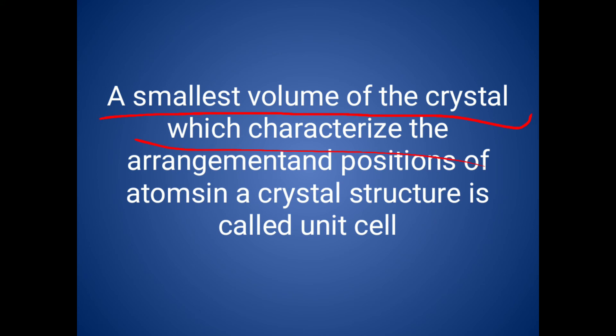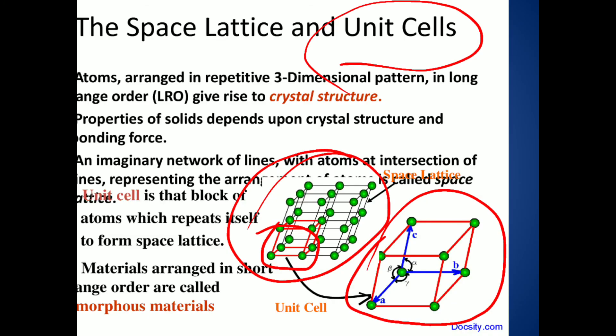That is called the unit cell. So to summarize: space lattice is an imaginary line which connects all the lattice points, and the unit cell is the smallest part of an entire structure. That is called the unit cell.